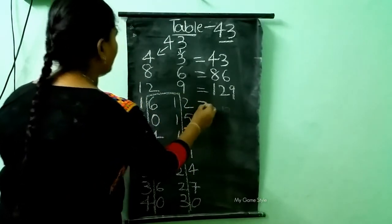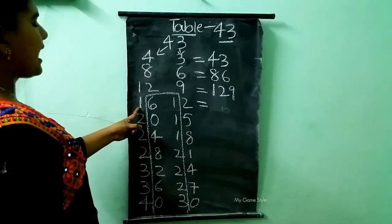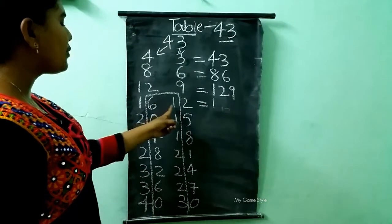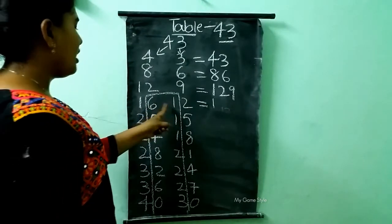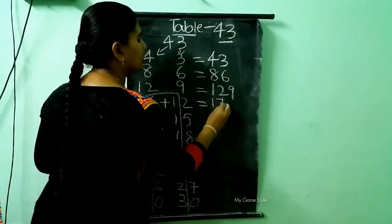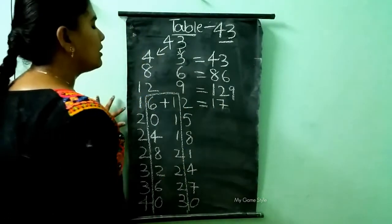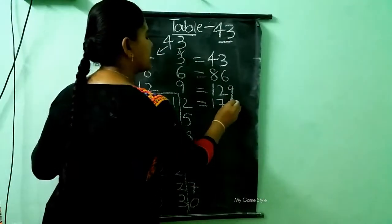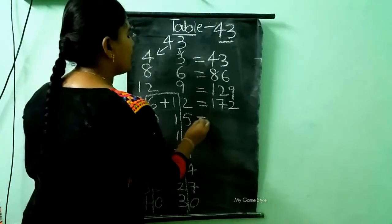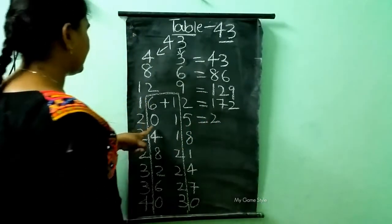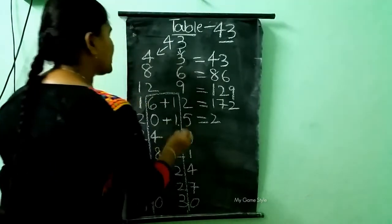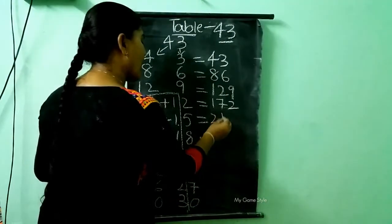And here 1 is there, so I am writing 1 as it is here. Next we are adding these both numbers here. 6 plus 1, how much children? 7. Here 2 is there, so 2 as it is. And here also same thing — here 2 is there, so I am writing 2 as it is. And 0 plus 1, how much children? 1.